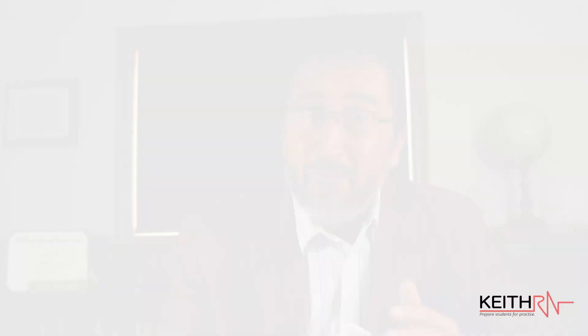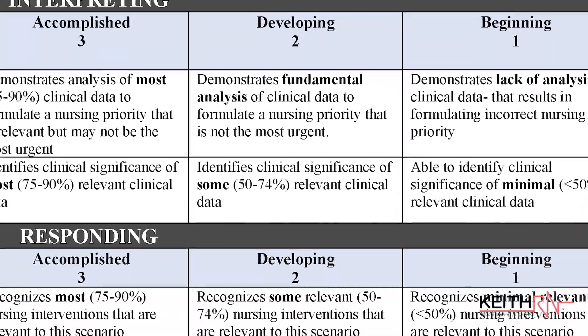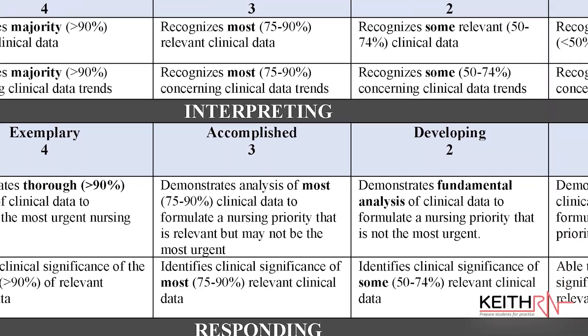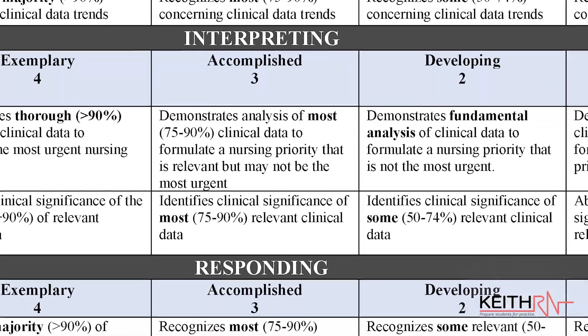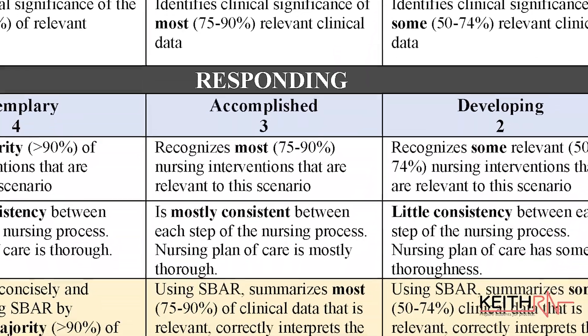The goal for first year students should be at the developing level, scored at two points with 11 processes, so if using an unfolding reasoning case study, the total score would be 22. Second year or advanced students should be at the accomplished level, scored at three points with 11 processes, so if using an unfolding reasoning case study, the total score should be around 33.